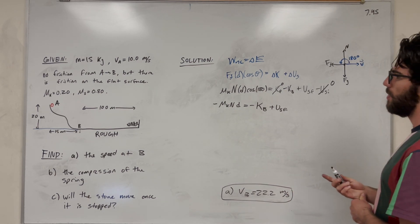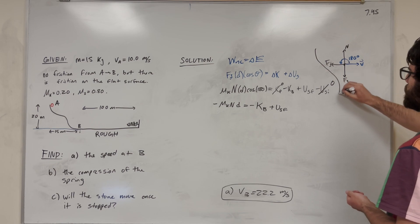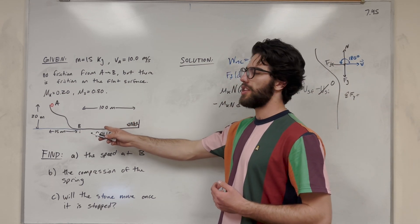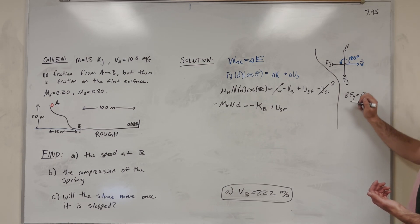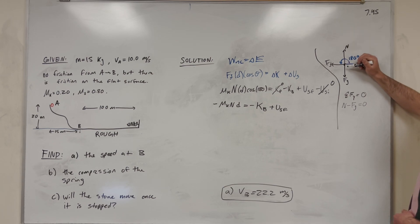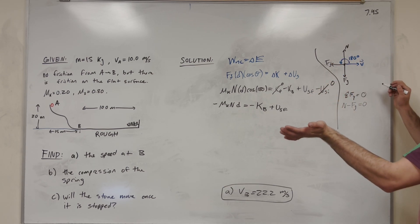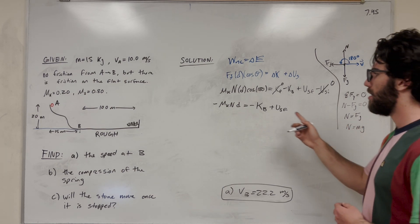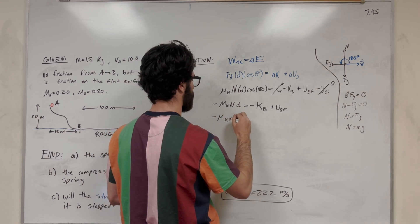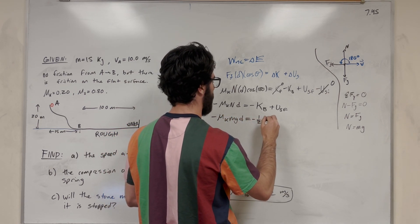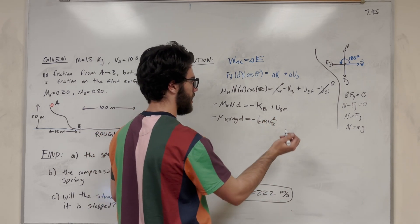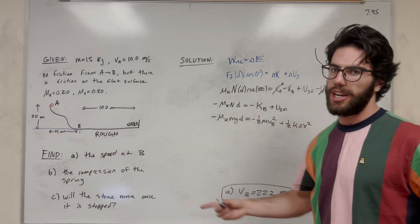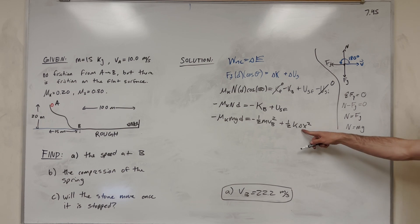We don't know what normal force is, so let's eliminate it using the free-body diagram. Taking sum of forces in the Y direction equals zero — the block isn't accelerating off or into the ground — so normal minus force of gravity equals zero, meaning normal equals mass times gravity. Plugging in: negative mu sub K times mass times gravity times distance equals one-half mass times velocity at B squared plus one-half K delta X squared. We're solving for delta X, the compression of the spring.